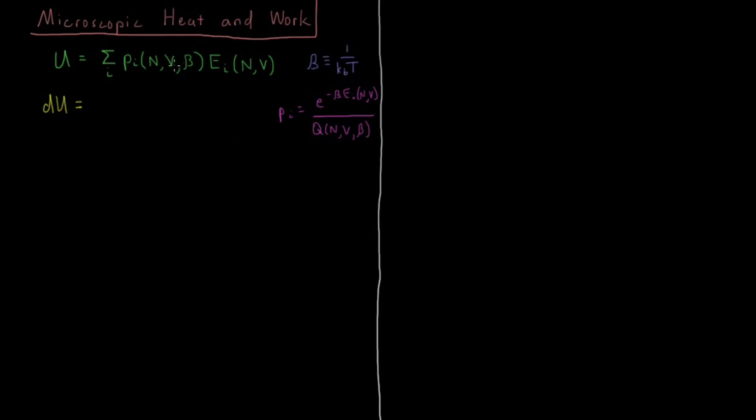We have a product of two functions here, so we're going to use the product rule. First term, I'm going to leave the probabilities undisturbed and differentiate the energy levels. And in the second term, doing the opposite, leaving the energy levels untouched and differentiating the probabilities.